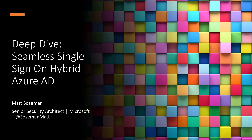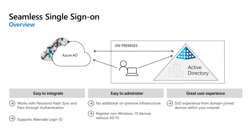Can you achieve single sign-on in a seamless manner to your third-party apps and Office 365? Let me show you what I'm talking about when you're in a hybrid Azure Active Directory topology. Seamless SSO is pretty awesome. When you have password hash sync or pass-through authentication in a hybrid Azure Active Directory topology, this is where it starts to come alive. It works with not only Office 365, but also other third-party apps.